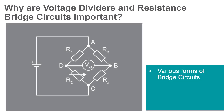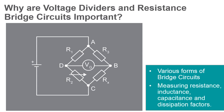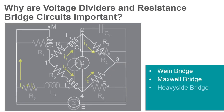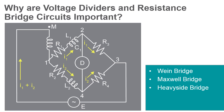Various forms of resistive bridge circuits are used to measure not only resistance, but inductance, capacitance, and dissipation factors in circuits. Other arrangements such as the Wien bridge, the Maxwell bridge, and the Heaviside bridge use the same basic principle of comparing the output of two potentiometers sharing a common source to determine an unknown value.